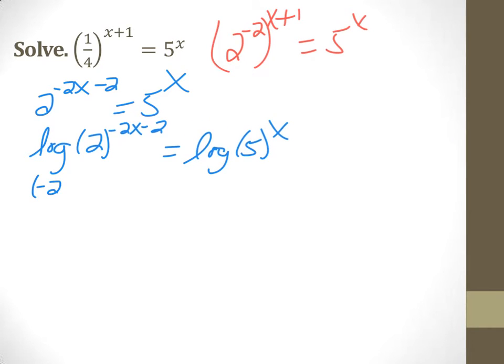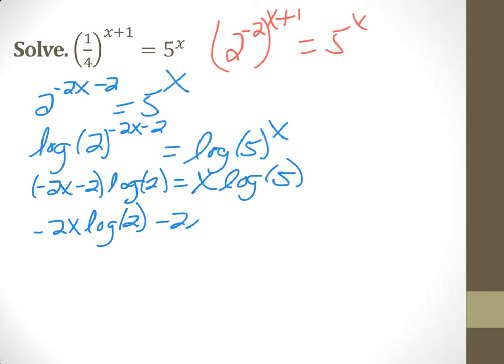On the left, use parentheses so that you don't lose a piece. On the right, you just have an x. And then on the left, let's go ahead and distribute. We get negative 2x log of 2, minus 2 log of 2. On the right, you get x log of 5.